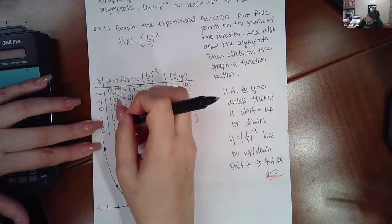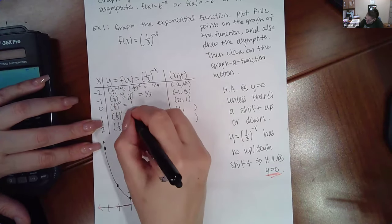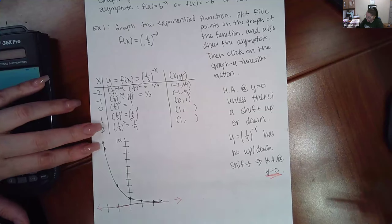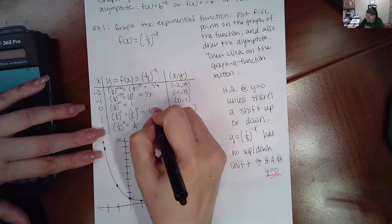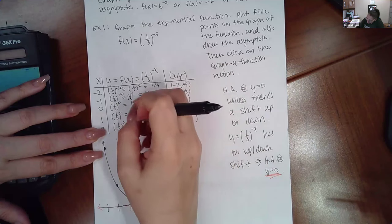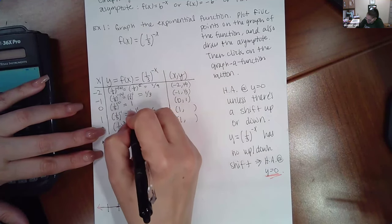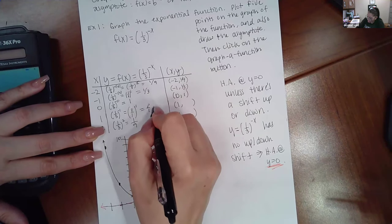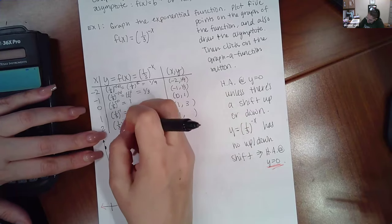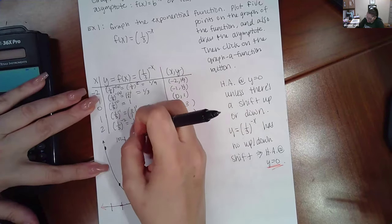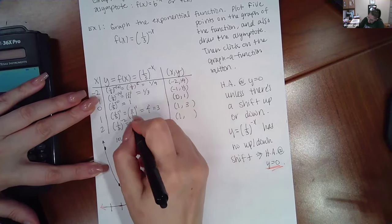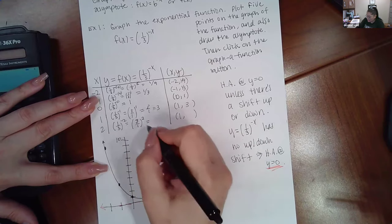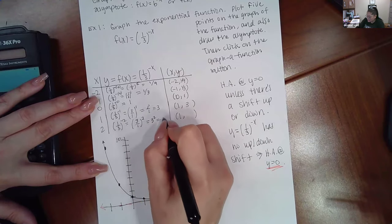Now here, this would be one third to the negative one, which means that the fraction flips over, and then the exponent becomes a positive one, which means the result is... I'm sorry, it flips over, so it should be three over one, and three over one to the power one is just three over one, or just three. Now here, we should have a negative two exponent, but then the negative exponent will make the fraction flip over, so become a positive exponent, and then three squared is equal to nine.